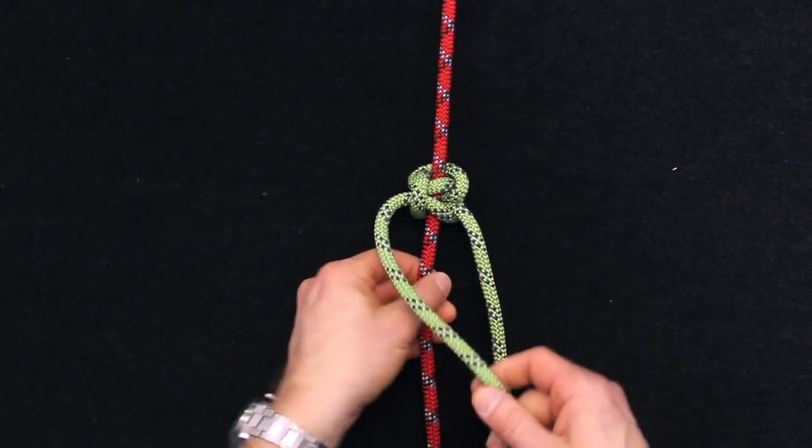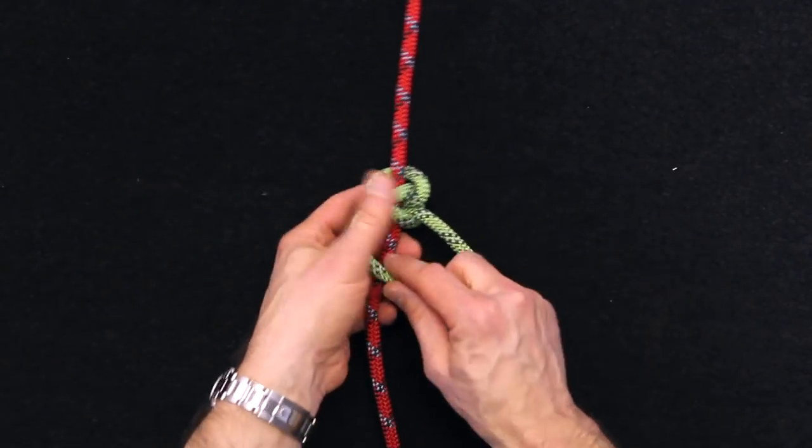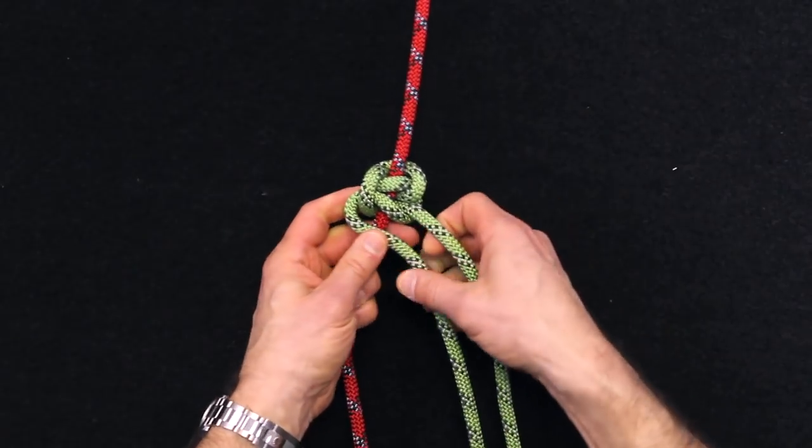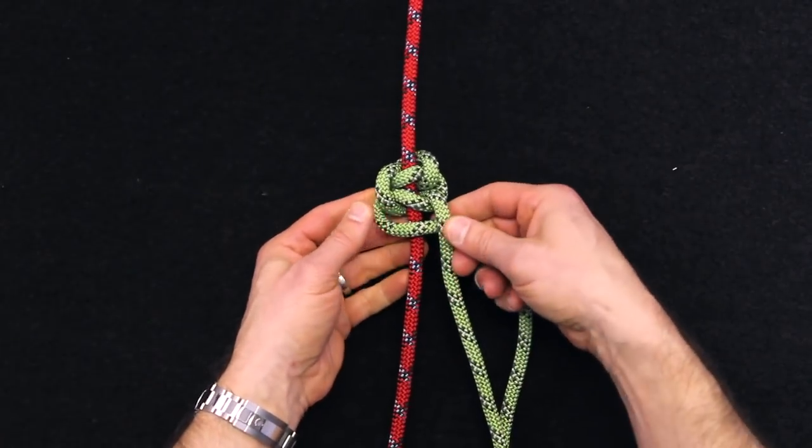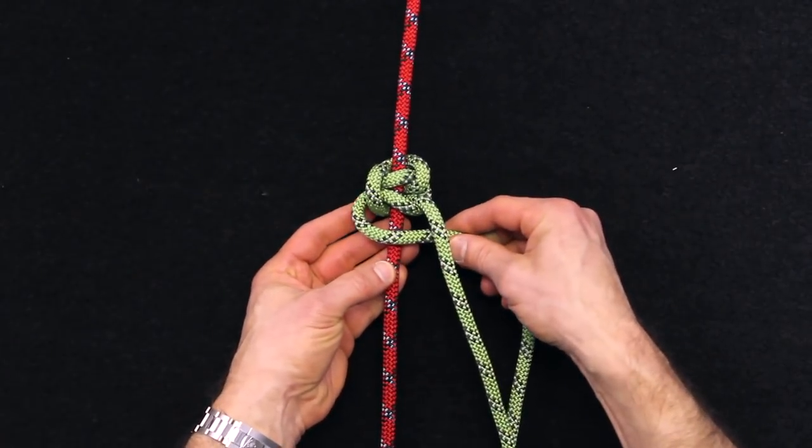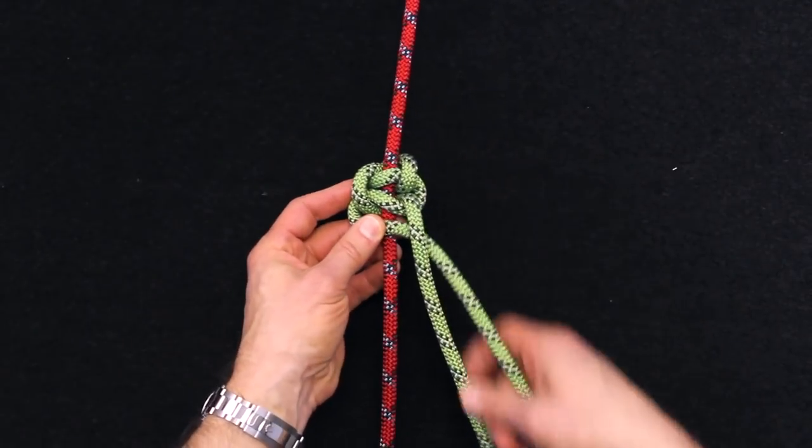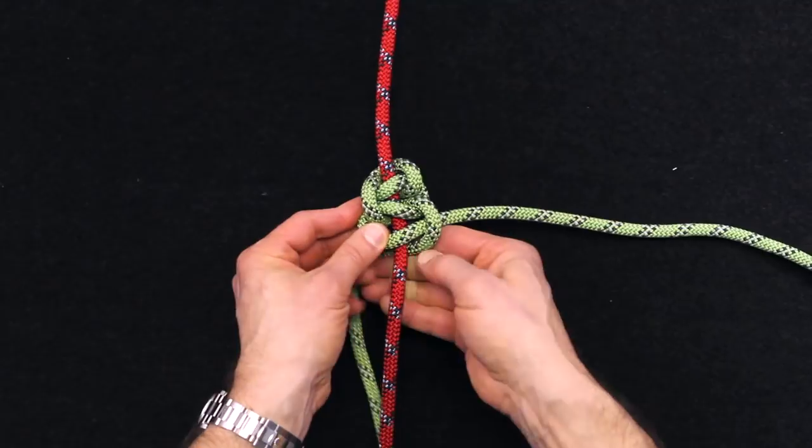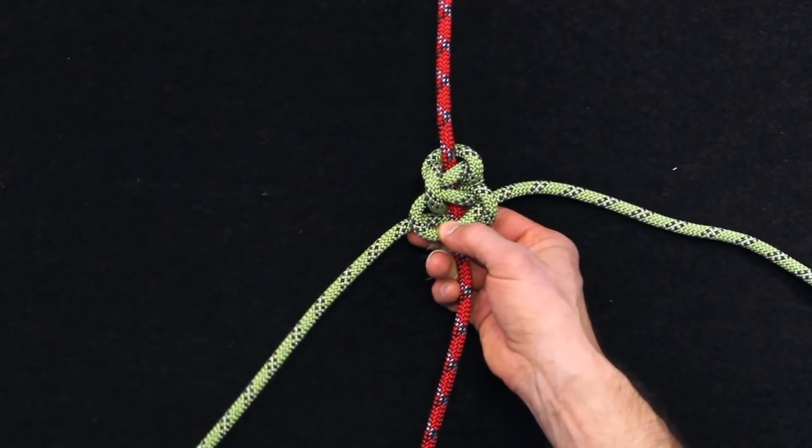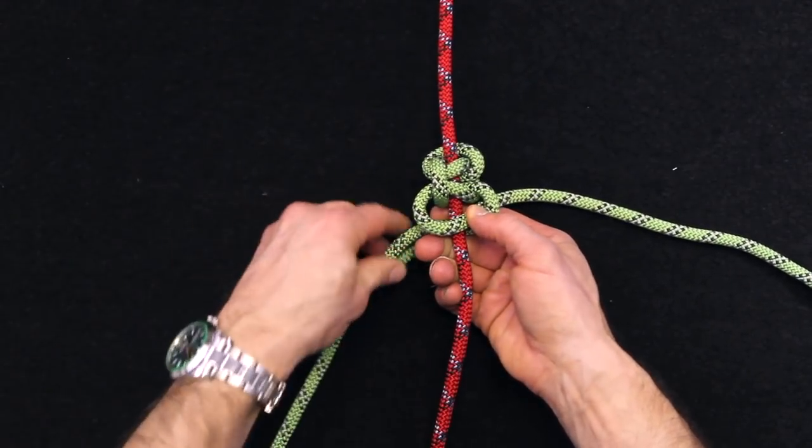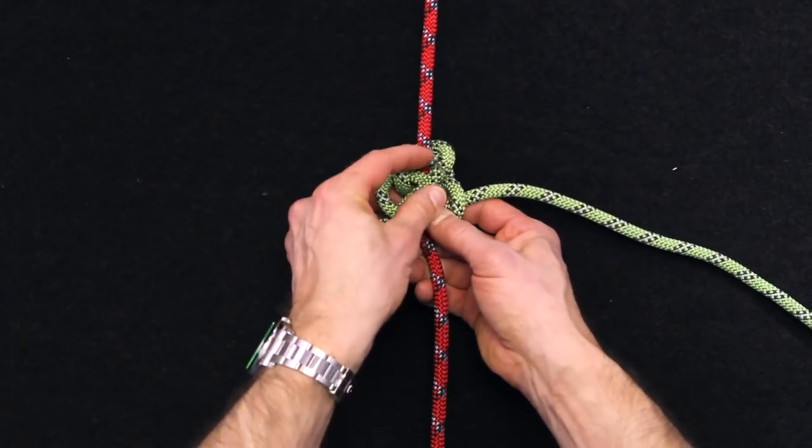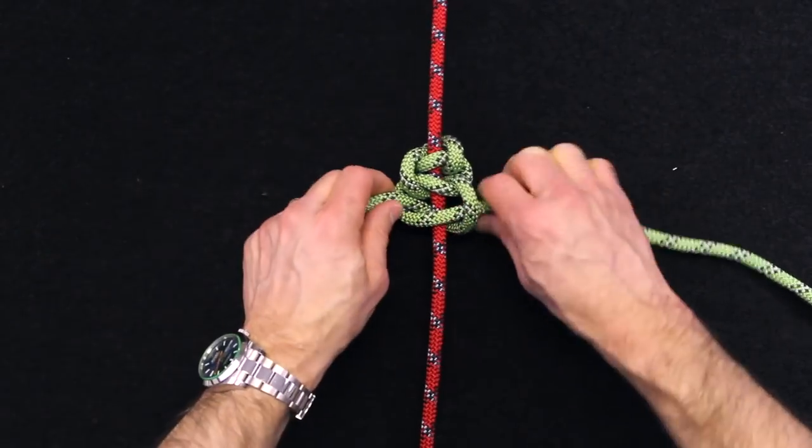As I mentioned before, I'm going to drop the right side working end and move to the left side. And I'm going to now move this across the top of that standing part of this line. And now we'll transition again to the right side. And I'll pick this back up and come through that one more time. So you can see the pattern that's starting to develop now.